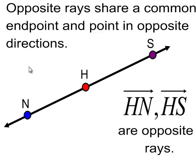Opposite rays share common endpoints. So, H is the common endpoint. So, H, N extending infinitely, and H, S. Those are opposite rays. And you'll notice that all three points that we're talking about here are all collinear.